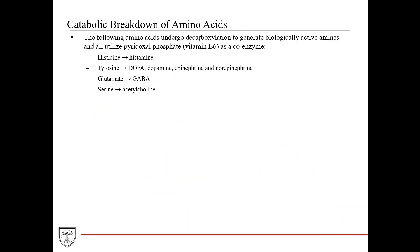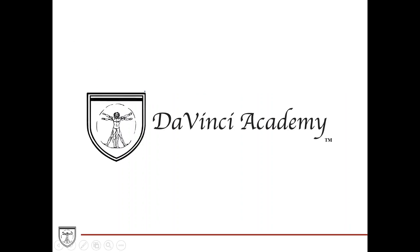Several amino acids undergo decarboxylation to generate biologically active amines, all utilizing pyridoxal phosphate (vitamin B6) as a coenzyme. Histidine is converted to histamine, tyrosine can be converted to DOPA, dopamine, epinephrine, and norepinephrine (covered in a dedicated lecture), glutamate is converted to GABA, and serine is converted to acetylcholine. This concludes the first lecture on amino acid metabolism — specifically, the catabolism of amino acids.